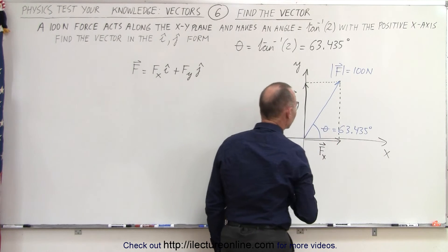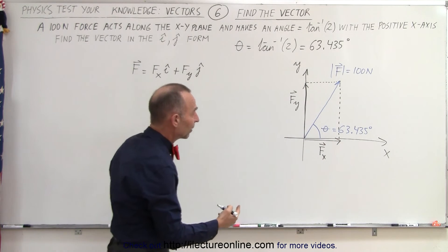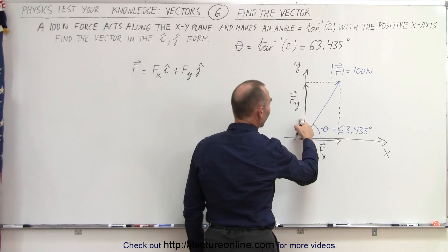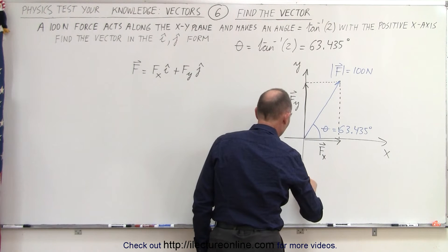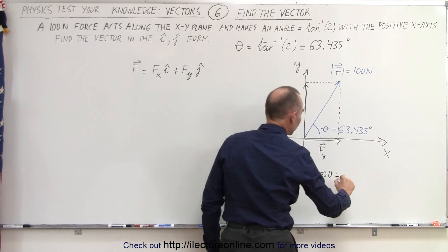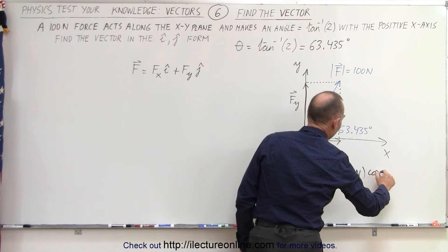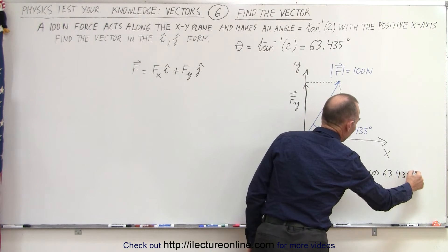Of course, these are vectors themselves. And now, we're supposed to find the magnitude of those two vectors, which can be found by taking the cosine and the sine of the angle. So that means F sub X is equal to F times the cosine of theta, which is equal to 100 Newtons, multiplied times the cosine of 63.435 degrees.